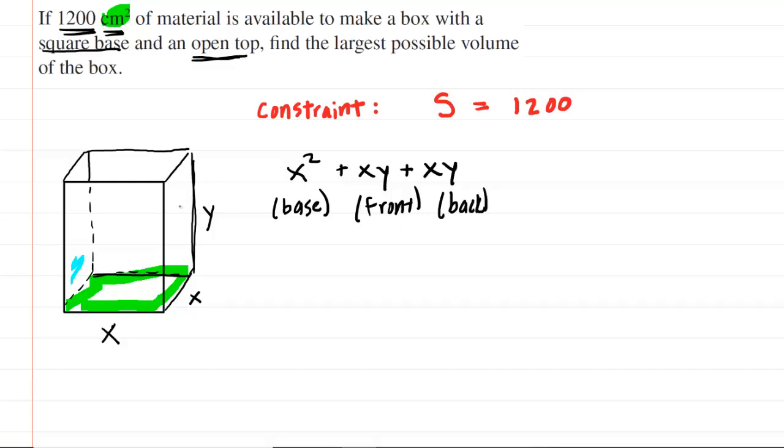Then you have the right side, whose area is also X times Y, and then the left side has an area of X times Y. So there would be two more XYs here, and those would represent the right and left sides. So that one's for the right, that one's for the left. That does give us our five sides. This is all set equal to 1,200.